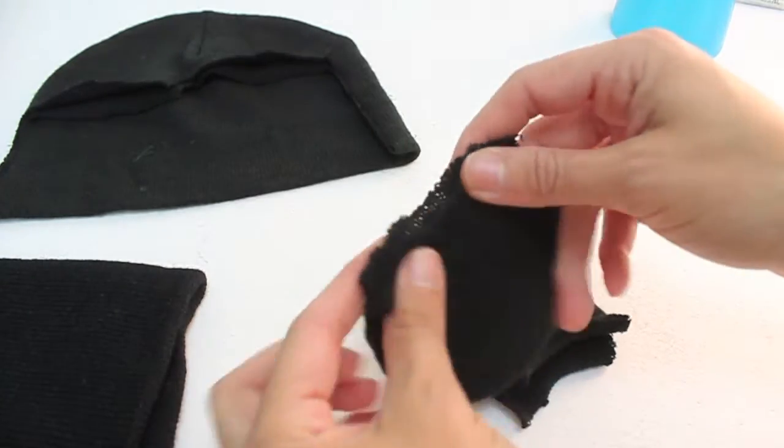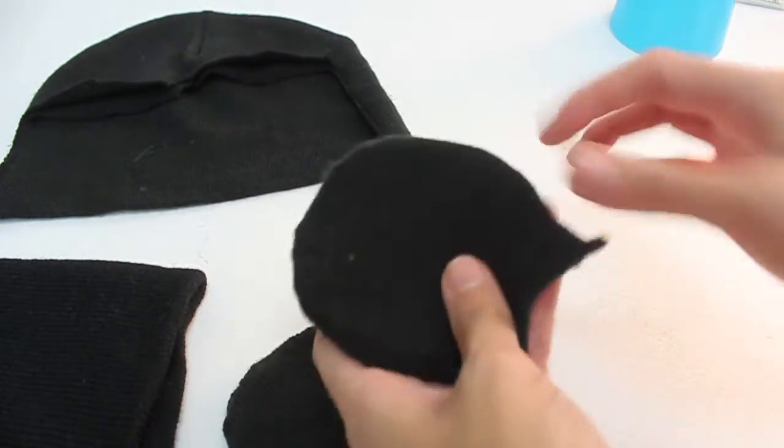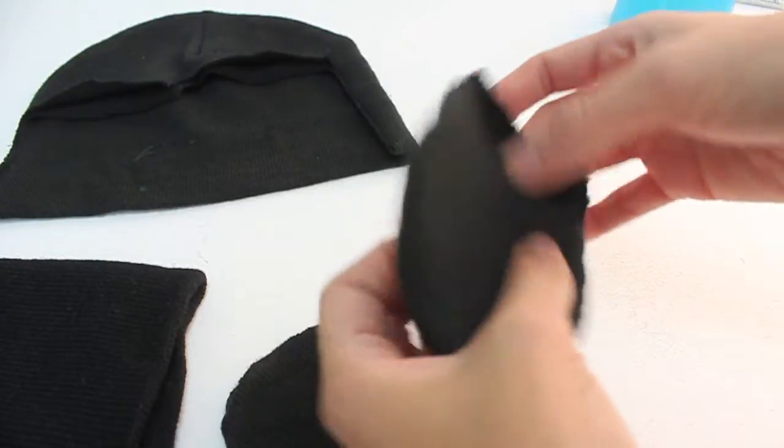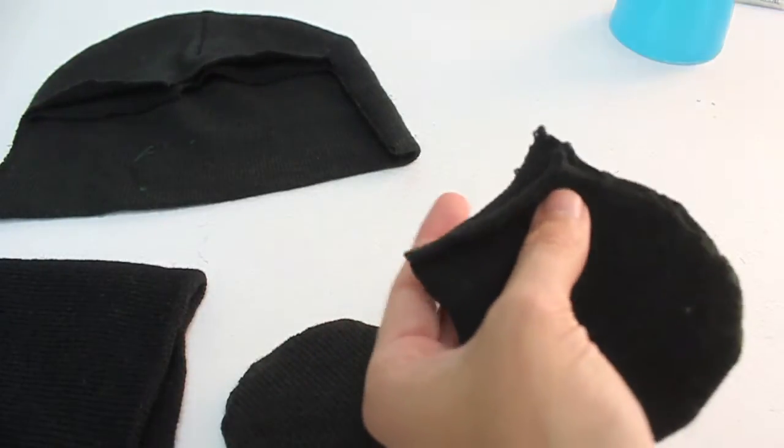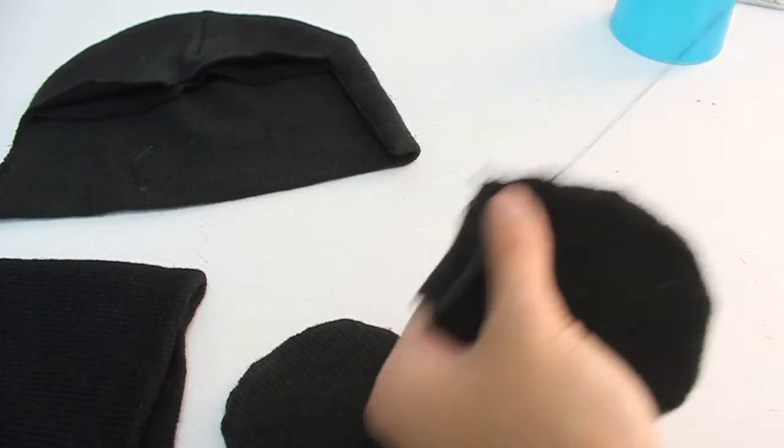So now that you have both of your ears completely done, what you're going to do is begin to sew the bottom together. You're going to sew it shut. So go ahead and sew both sides.